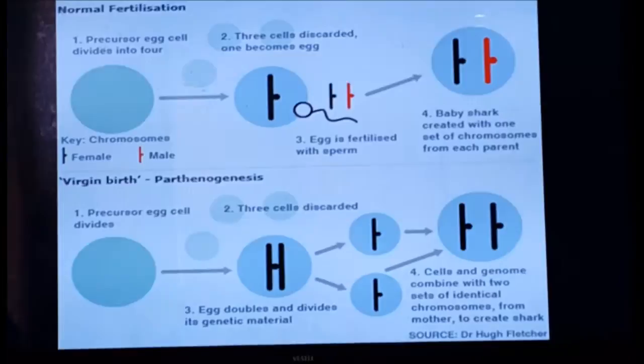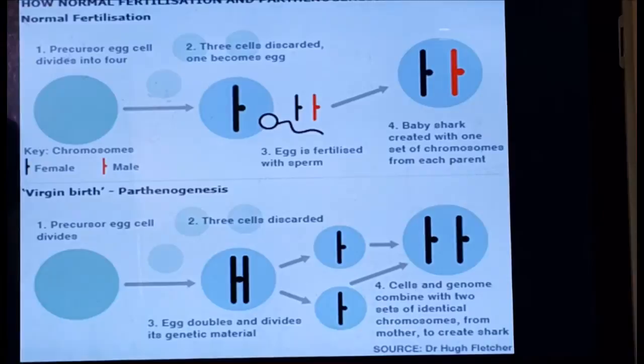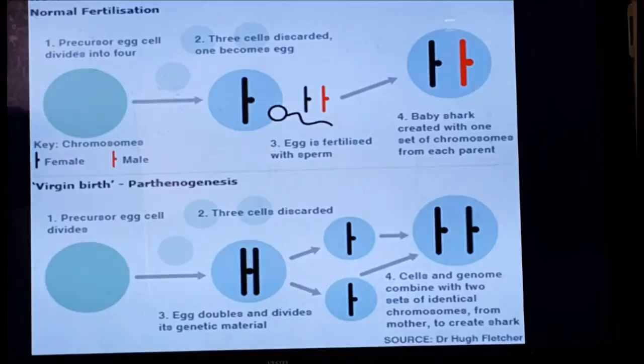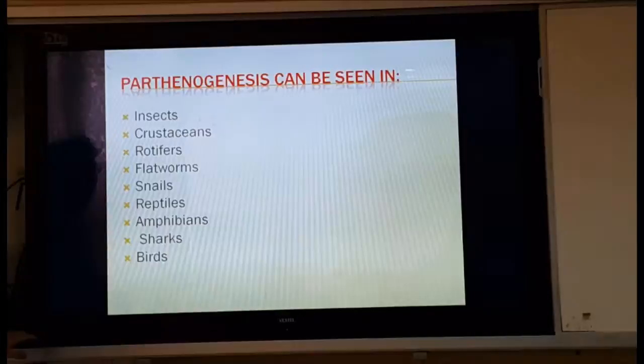How do normal fertilization and parthenogenesis differ? In normal fertilization, a precursor egg cell divides into four cells, three cells are discarded, and one becomes the egg. The egg is then fertilized with sperm, producing offspring with one set of chromosomes from each parent. In parthenogenesis (virgin birth), the precursor egg cell divides, three cells are discarded, but then the egg doubles and divides its genetic material. The cells and genomes combine two sets of identical chromosomes from the mother to create the offspring.